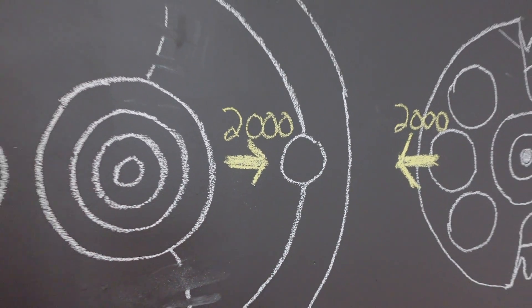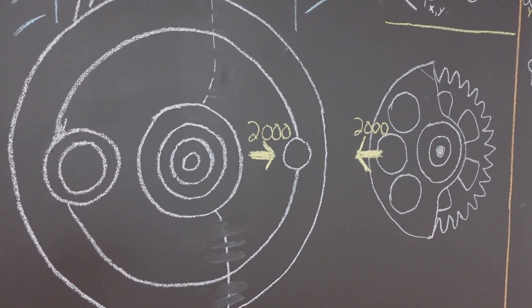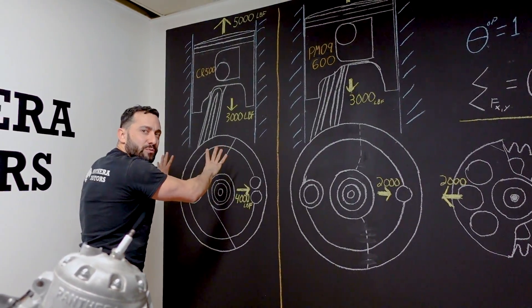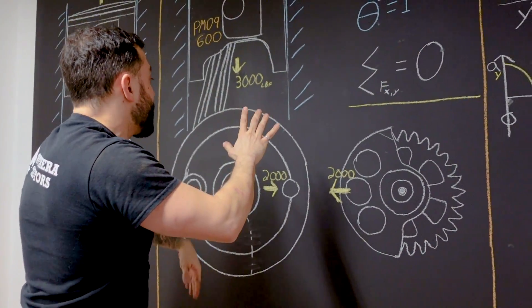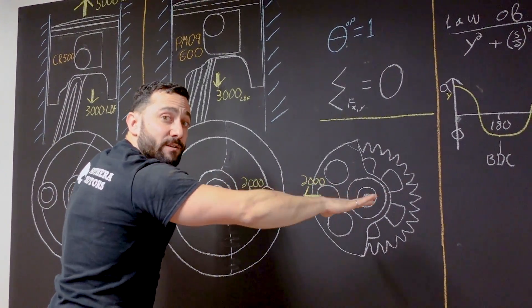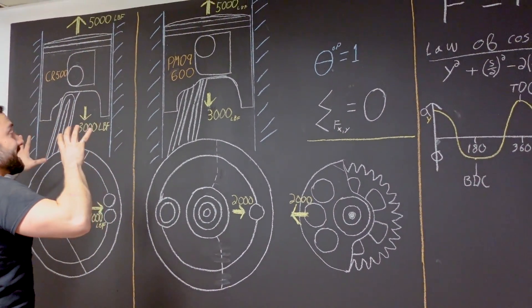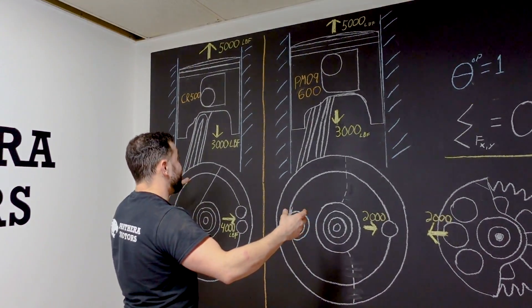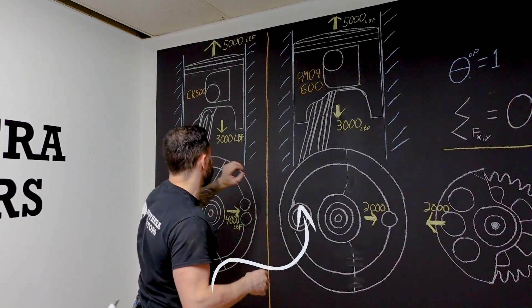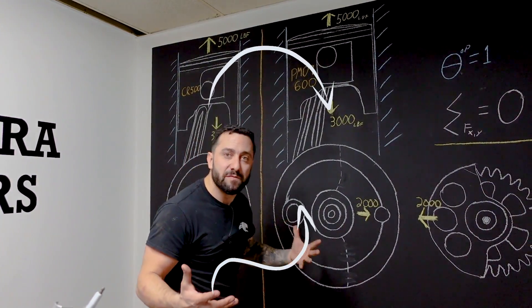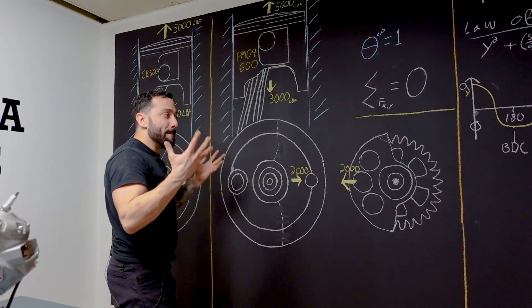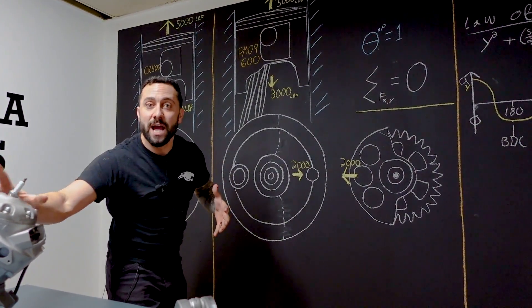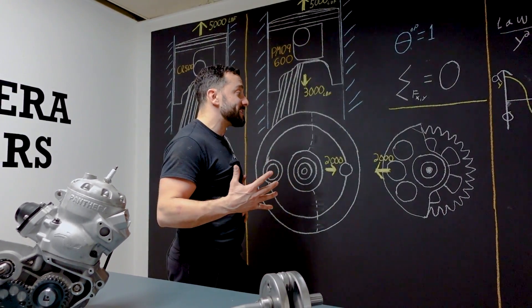So that's much better from going through to the 2,200 average we have here to an average of 500 up and down and zero horizontally. So in that case we've improved, decreased the vibration from this case to this one about 75%. And that's why you're going to have that kind of balancer shaft in most modern engines, including our new PM09 600cc.